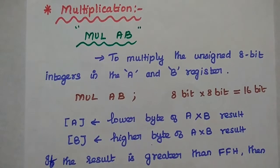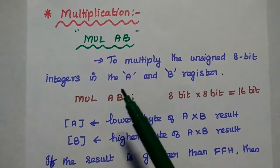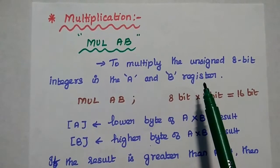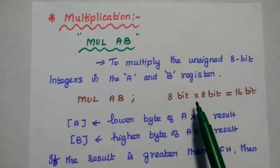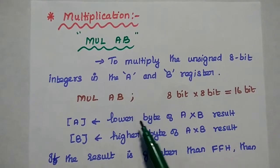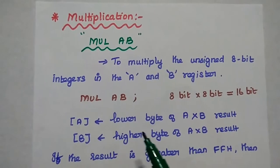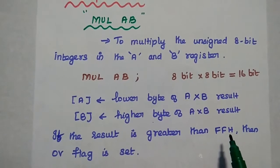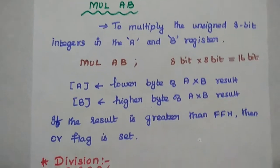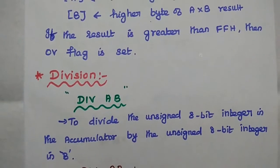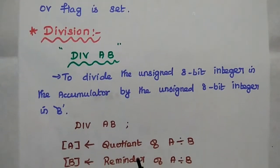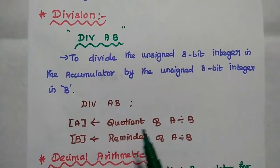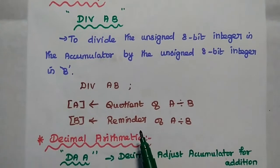In 8051, unsigned 8-bit multiplication is done using the instruction MUL AB. This instruction multiplies the unsigned 8-bit integers in the A register and B register. Multiplying 8-bit by 8-bit gives a 16-bit result — the lower byte is stored in A register and the higher byte in B register. If the result is greater than FF, the overflow flag is set. Division is performed using DIV AB, which divides the unsigned 8-bit integer in the accumulator by the B register — the quotient is stored in A and the remainder in B.